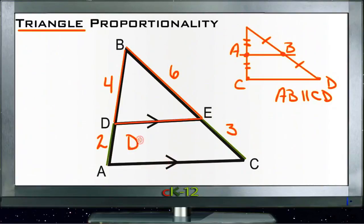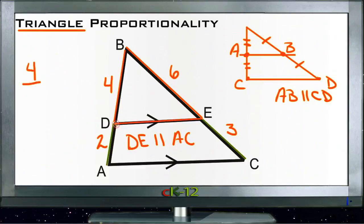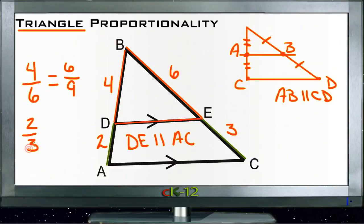Then this would be 6 and 3. Assuming DE is parallel to AC, these two other sides are going to be in the same proportion. The shorter side BD, which is 4, compares to the whole length BA, which is 6, in the same ratio as the shorter side over here, 6, compares to its whole length of 6 plus 3, or 9. And 4 out of 6 reduces to 2 out of 3, and 6 out of 9 reduces to 2 out of 3.